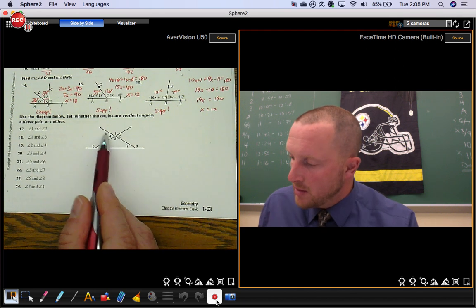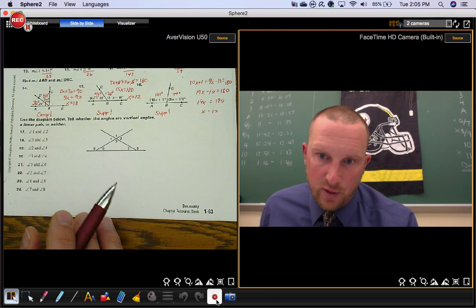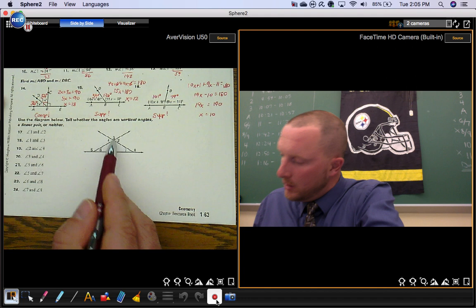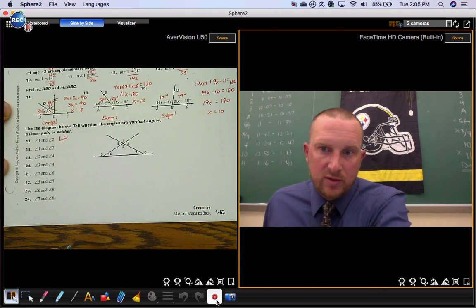Angles 2 and 4, they're made by these two lines, and they're not next to each other. That's an example of vertical. Okay, so angles 1 and 2 we said was a linear pair. Notice how I'm just using an abbreviation there.